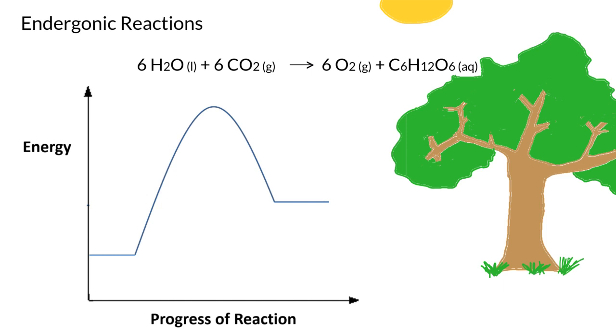In exergonic reactions, energy is released by the chemical reaction to its surroundings, and our products have less energy than our reactants. Endergonic is the opposite. In endergonic reactions, the products have more energy than the reactants, and the chemical reaction absorbs energy from the surroundings.